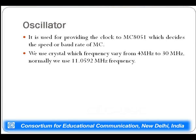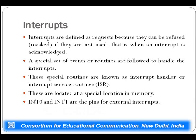The oscillator block provides the clock to the 8051, deciding its speed or baud rate. A crystal oscillator is used whose frequency can be fixed between 4 MHz and 30 MHz; normally it is fixed at 11.0592 MHz for the 8051. Interrupts are another very important aspect: while microprocessors require external interrupts to be connected, the 8051 has inbuilt interrupt capability on the chip.